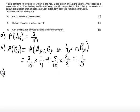Part C. Part C says Anne and Bethan choose sweets of different colors. So probability, let's just say different.